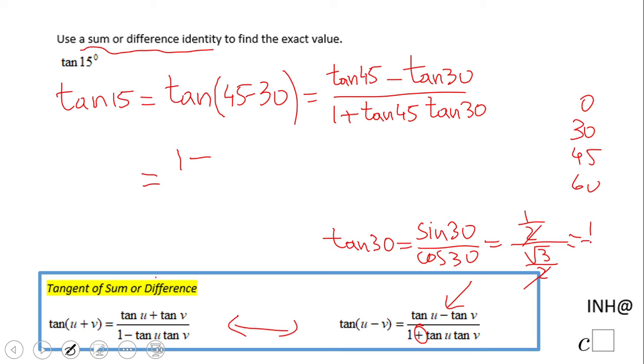That gives us 1 over square root of 3, or square root of 3 over 3. So we have 1 minus square root of 3 over 3 in the numerator, and the denominator becomes 1 plus square root of 3 over 3. Let's see what we get.